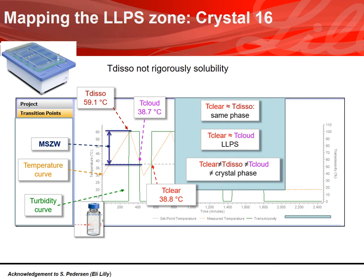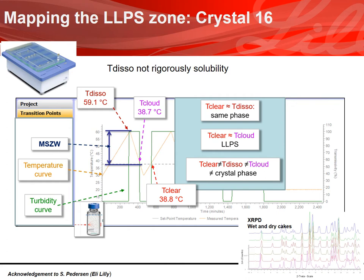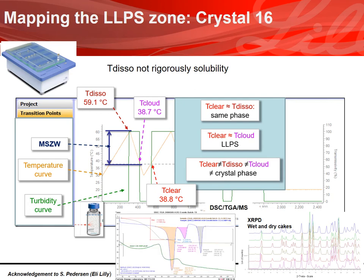If the clear point is similar to the cloud point, then it's LLPS — we are measuring the spinodal during cooling and the binode during heating. The last case is where the clear temperature differs from both the solution temperature and the cloud point, suggesting a new phase. All residues are analyzed by XRPD, and if a new form is identified, combined DSC/TGA/NMR analysis is performed to determine if it's a true polymorph or solvate, and HPLC is used to confirm molecular integrity.